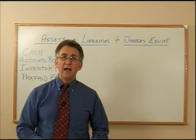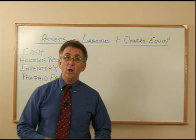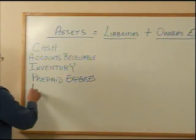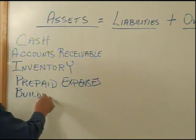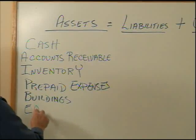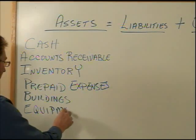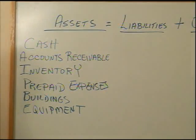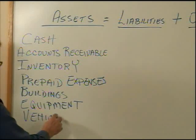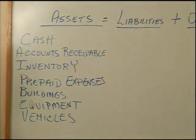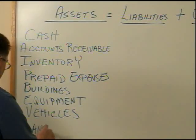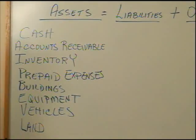Another asset is called plant, property, and equipment, and we usually list them as numerous things. We could list them as buildings — the more buildings we have, the more the value of the company. We could have equipment, and the more equipment we have, the more value. We could have vehicles, and the more vehicles we have, the more value to the company. Another item considered an asset is land — the more land we have, the more value of the company.